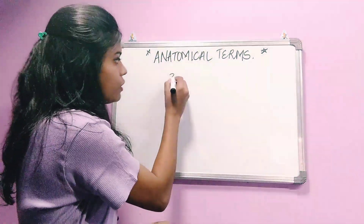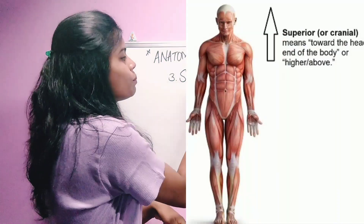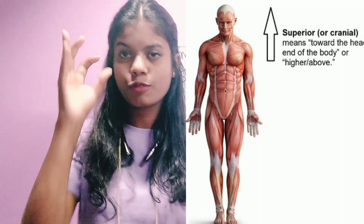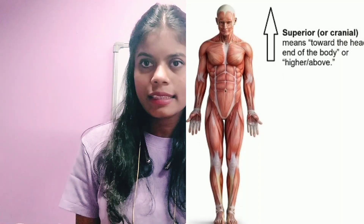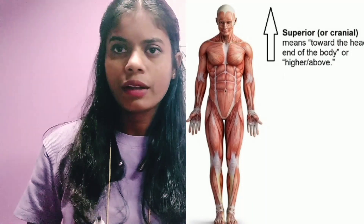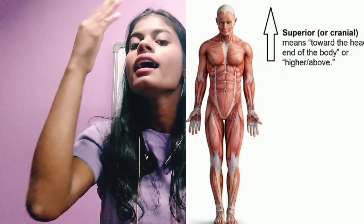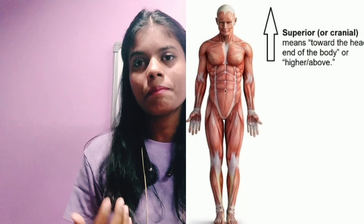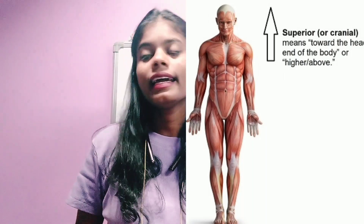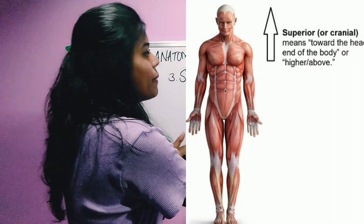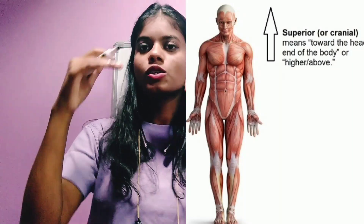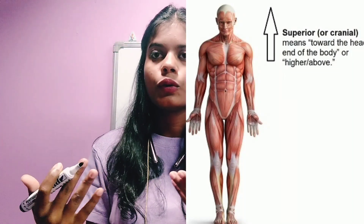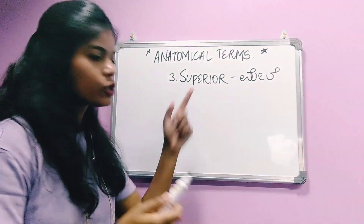Third word is superior — S-U-P-E-R-I-O-R. Superior means above. For example, in the anatomical position, the nose is superior to the mouth — meaning the nose is above the mouth. Superior means above.